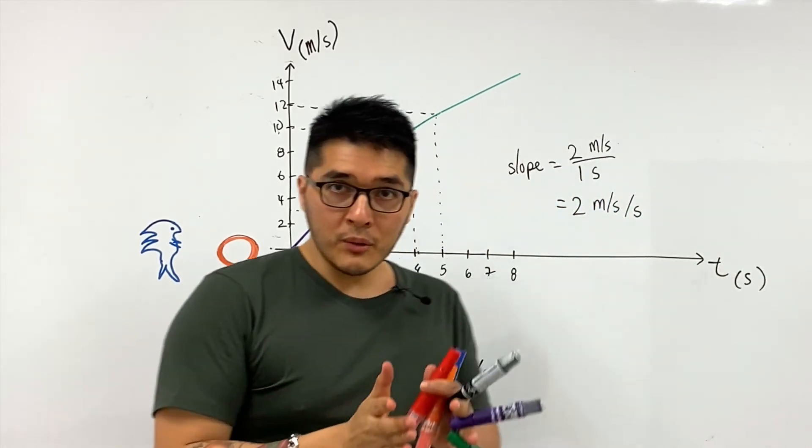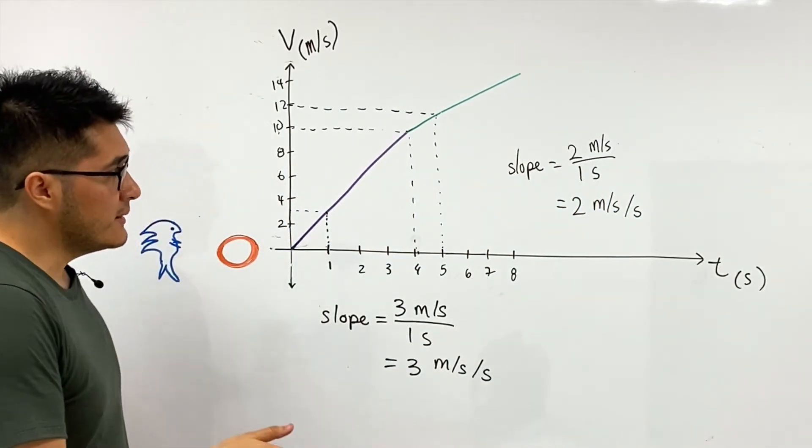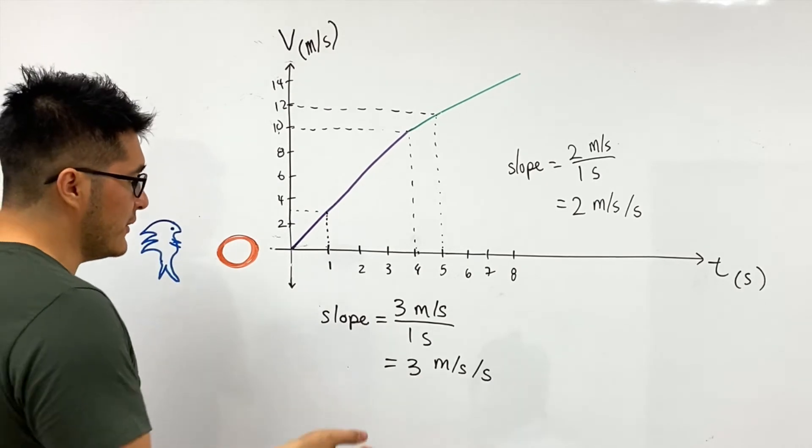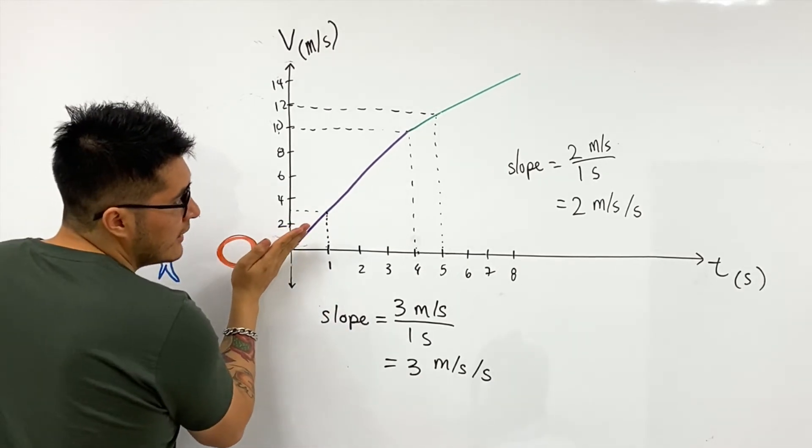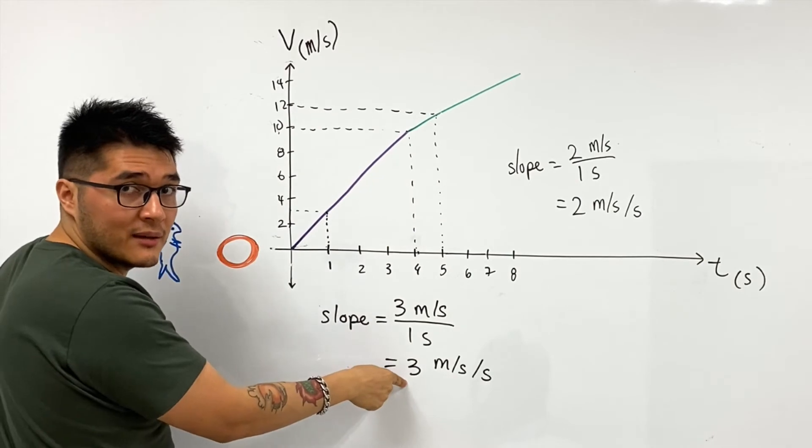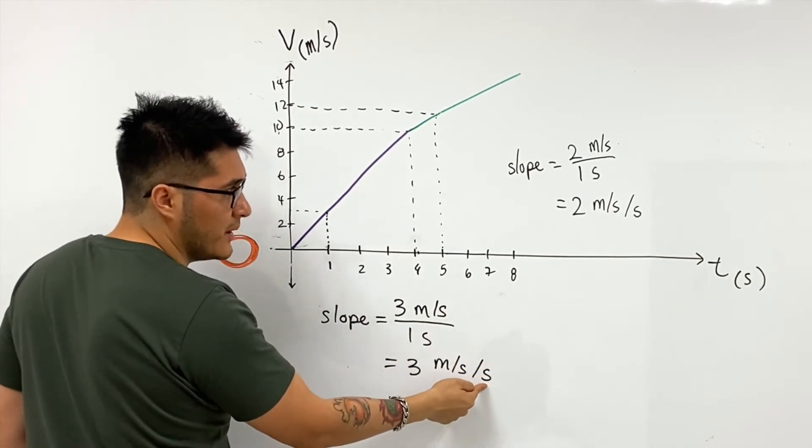So although we know that Sonic is still speeding up, the rate at which he speeds up is different. So at the beginning purple graph, speeding up at three meters per second each second that goes by.